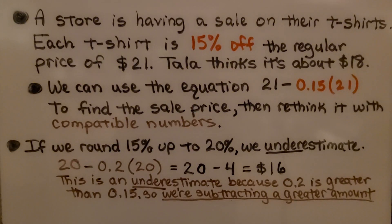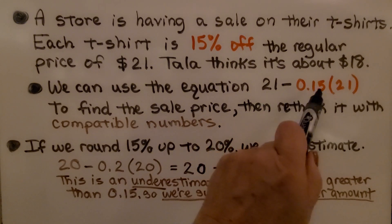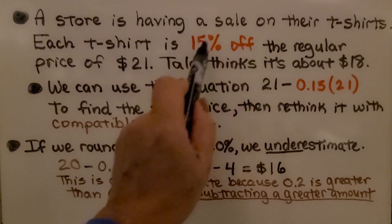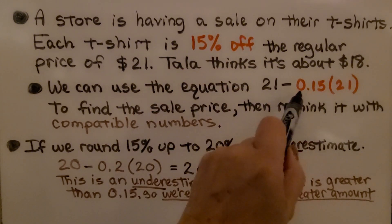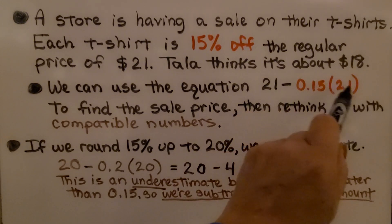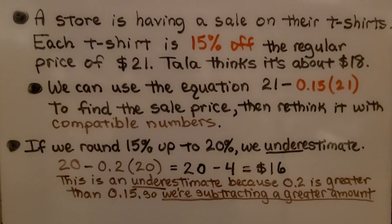A store is having a sale on their t-shirts. Each t-shirt is 15% off the regular price of $21. Tala thinks it's about $18. We can use the equation 21 minus 0.15 times 21. This represents the 15% off — we write the percentage as a decimal, 0.15, and multiply it by the original price, 21. That tells us what 15% off is, and we can use that to find the sale price, then rethink it with compatible numbers.